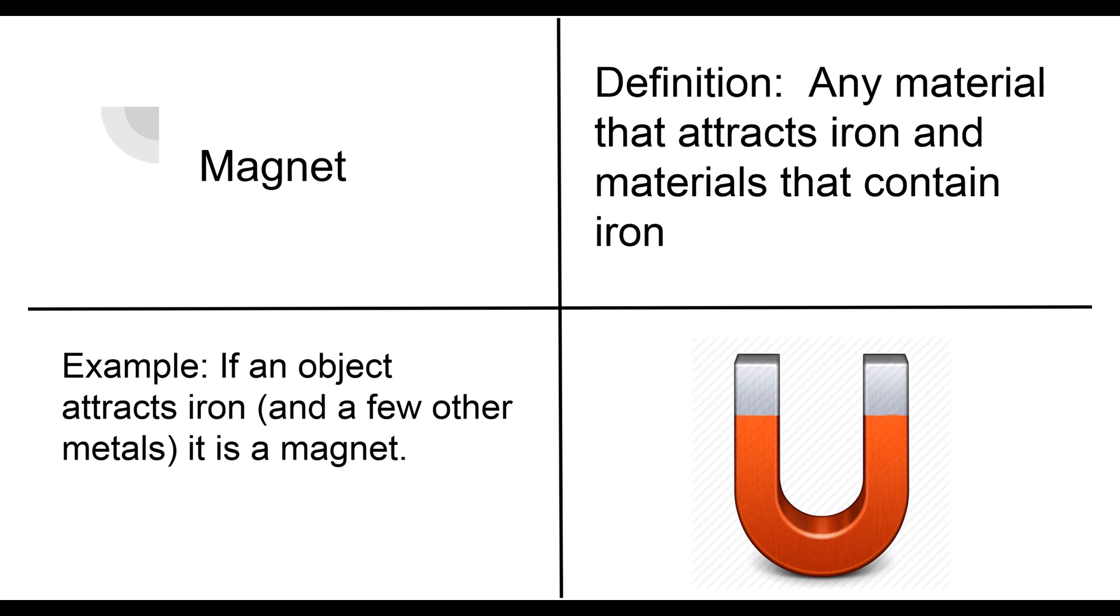Our example being, if an object attracts iron and a few other metals, so iron's the primary one, but there's definitely a few other metals, it is a magnet. And that's the general example and definition that we'll have.